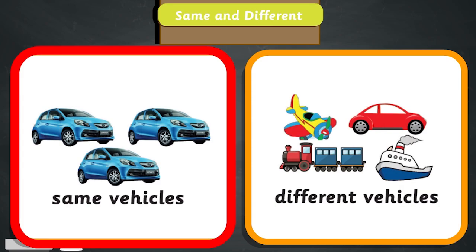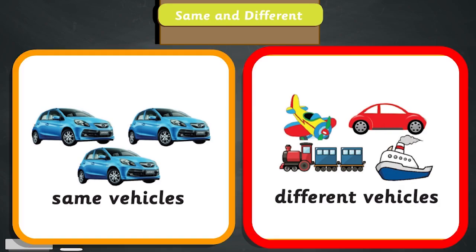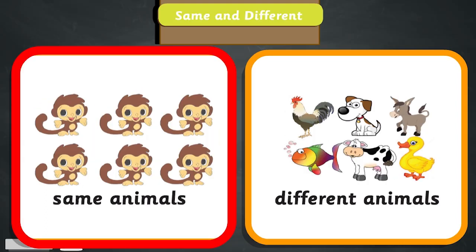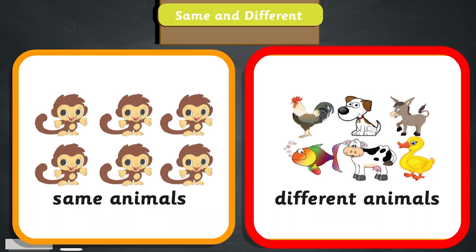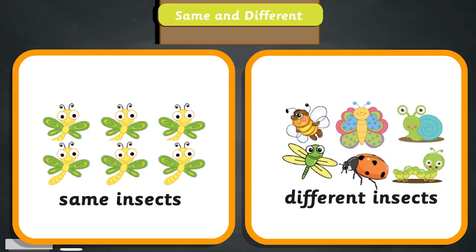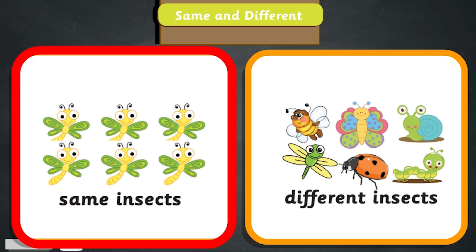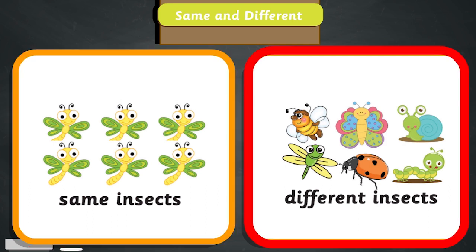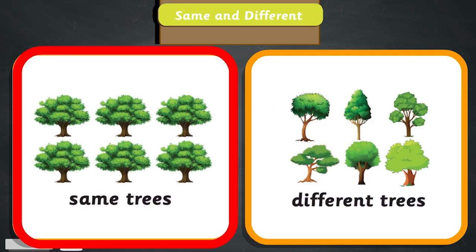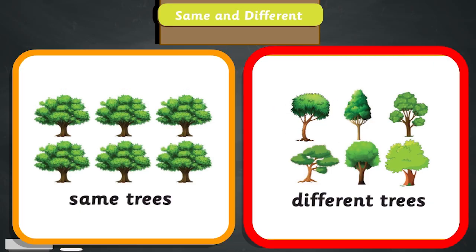Same and different. Same vehicles, different vehicles. Same animals, different animals. Same insects, different insects. Same trees, different trees.